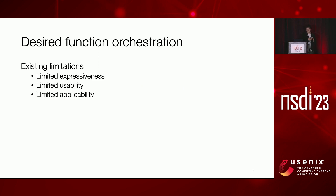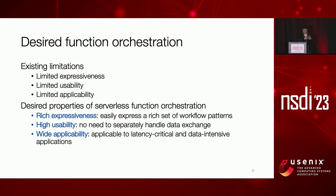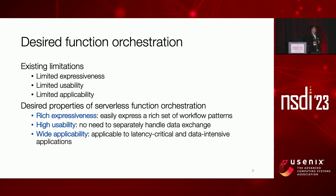We have discussed three limitations in today's function orchestration: limited expressiveness, limited usability, and limited applicability. Therefore, we propose that the designed function orchestration needs to meet three good properties. The first is rich expressiveness — the platform should let users easily express workflow patterns and specify fine-grained data exchange. The second is high usability — the platform needs to relieve users from separately handling data exchange in addition to function invocation. The third is applicability — we need high-performance function orchestration to enable both latency-critical and data-intensive applications.